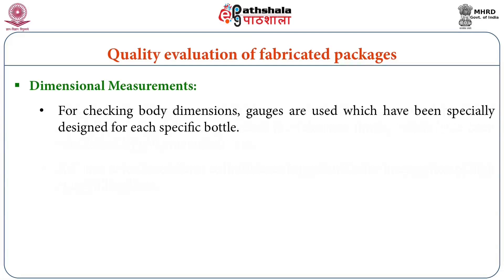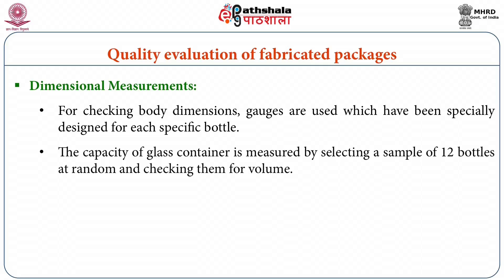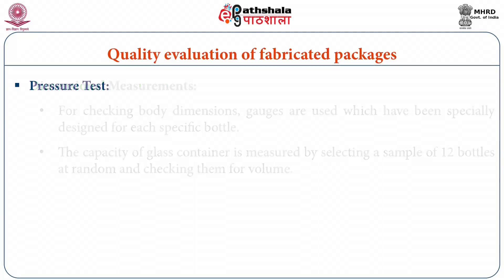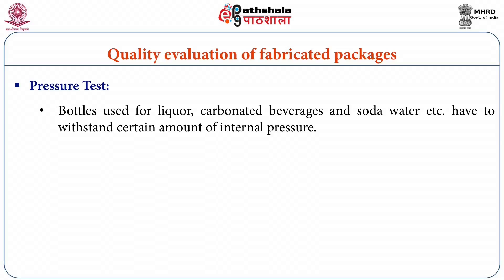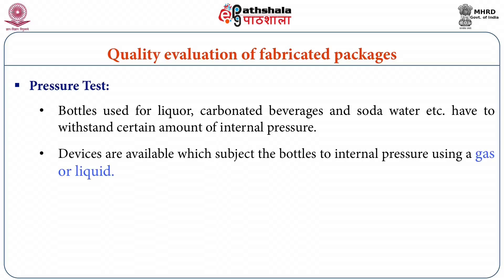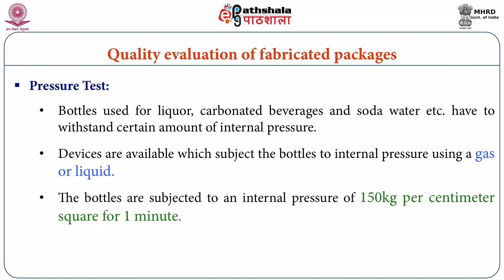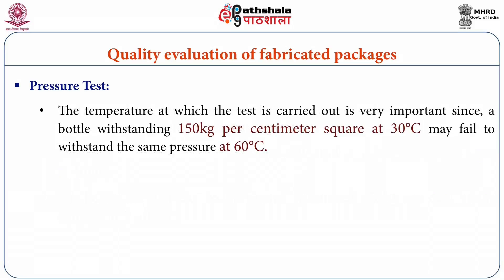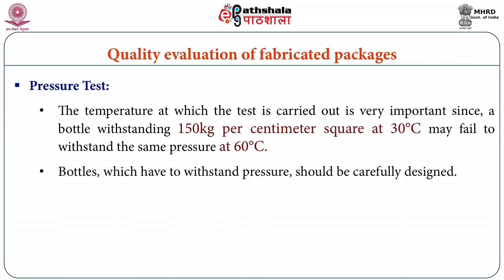For checking body dimensions, gauges are used which have been specifically designed for each specific bottle. The capacity of a glass container is measured by selecting a sample of 12 bottles at random and checking them for volume. Pressure test: The bottles used for liquor, carbonated beverages, and soda water, etc., have to withstand a certain amount of internal pressure. Devices are available which subject the bottle to internal pressure using a gas or liquid. The bottles are subjected to an internal pressure of 150 kg per centimeter square for one minute. The temperature at which the test is carried out is very important, since a bottle that withstands 150 kg per centimeter square at 30 degrees centigrade may fail at 60 degrees centigrade. Bottles that have to withstand pressure should be carefully designed.